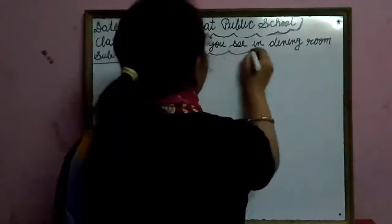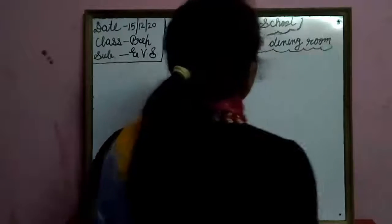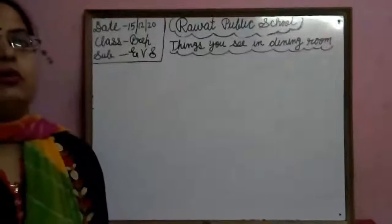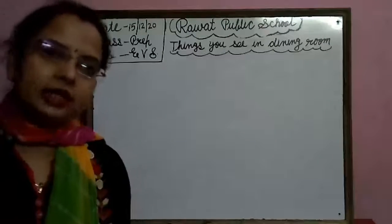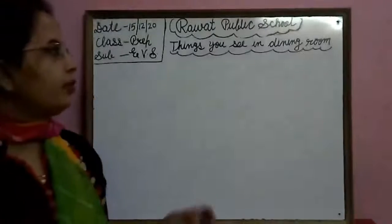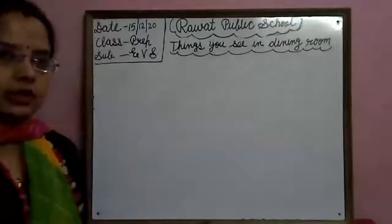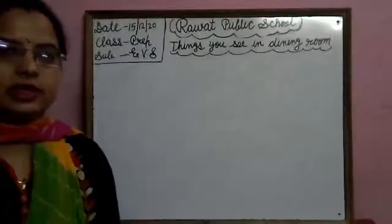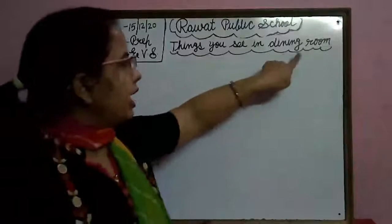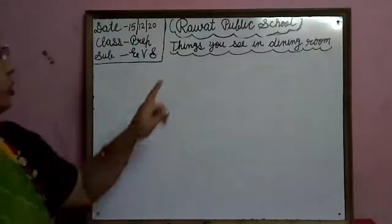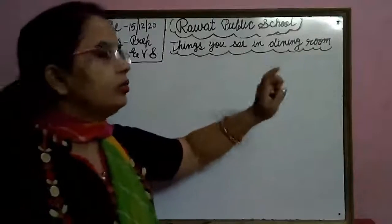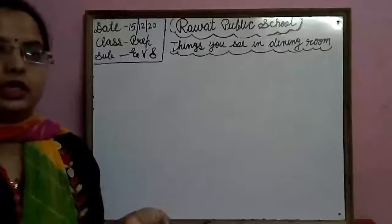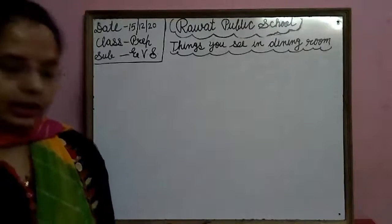What is the meaning of dining room? Dining room का मतलब क्या होता है? Dining room कौन सा होता है? जिसमें हम खाना खाते हैं, वो dining room होता है। Dining room — we take our breakfast, lunch and dinner. जहाँ पर हम breakfast करते हैं, lunch करते हैं, dinner करते हैं, वो dining room होता है। So, things you see in dining room — तो वो चीजें आज हम सीखेंगे जो dining room में हम देखते हैं।